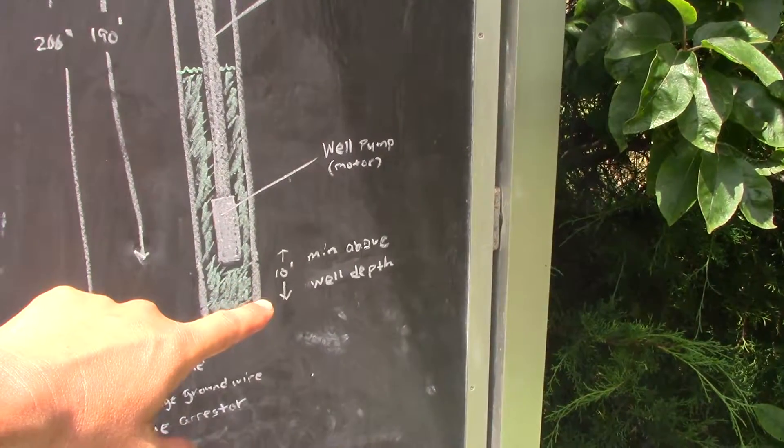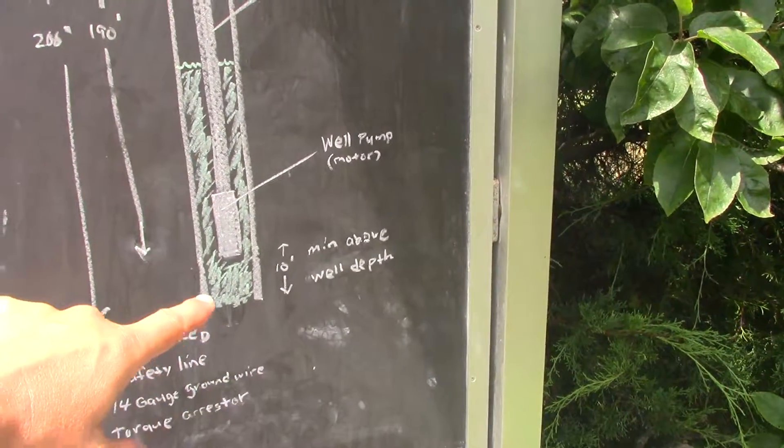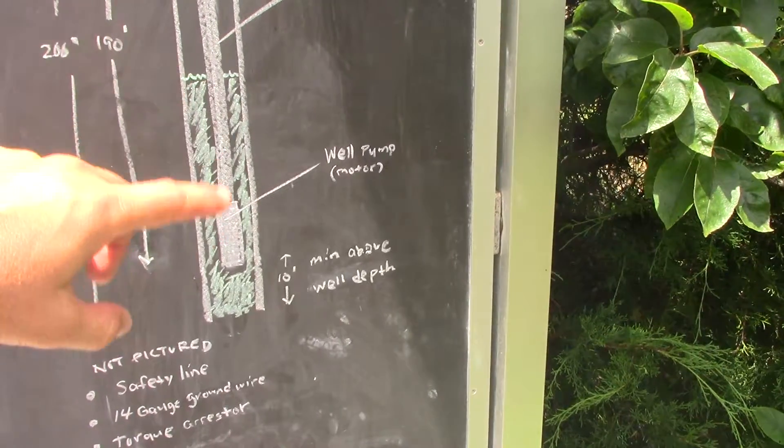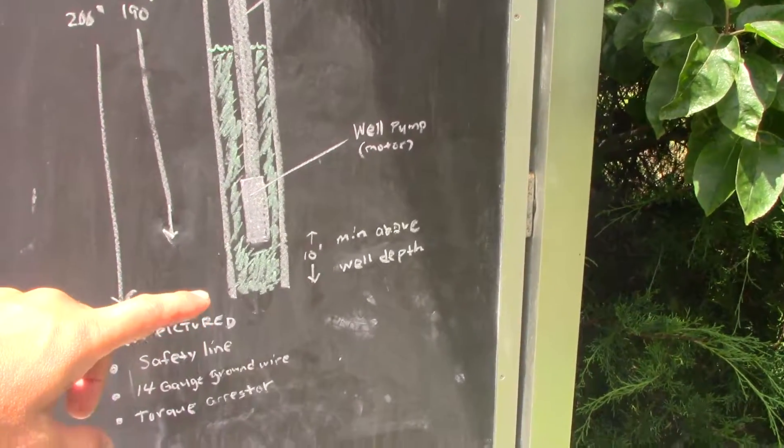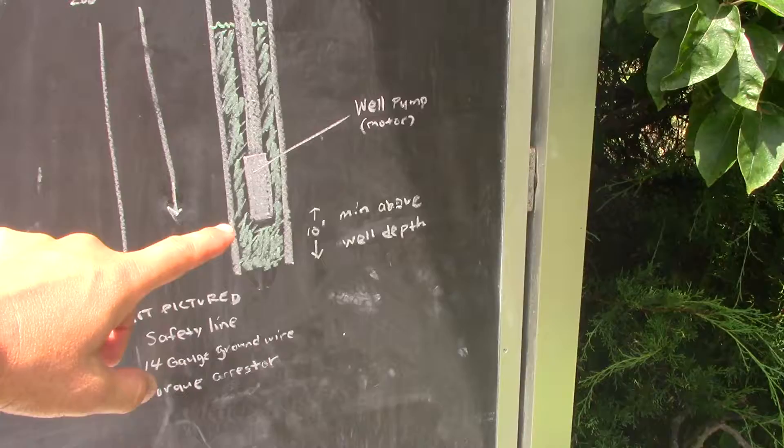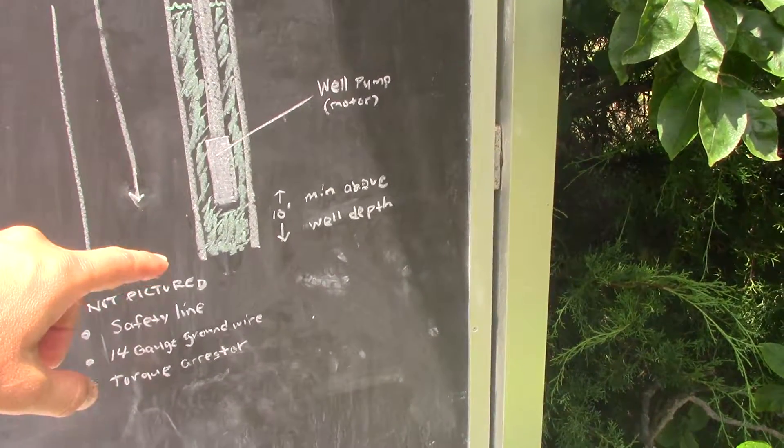You want to be a minimum of 10 feet above the well depth so you don't get the grime and dirt—all of that stuff continually coming up into your pump. You want some space there to collect that settlement.